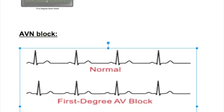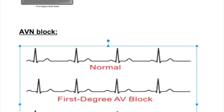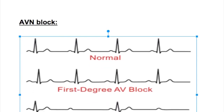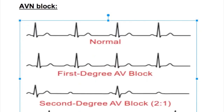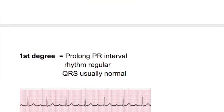The next topic is AV nodal blocks. There are three types: first degree, second degree, and third degree block. In the first degree block, there is a prolonged PR interval. The rhythm is regular and QRS is usually normal.